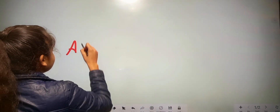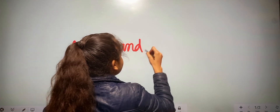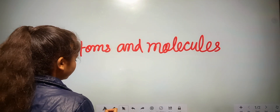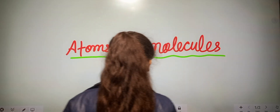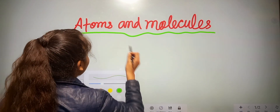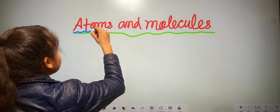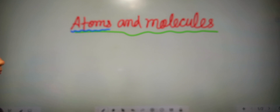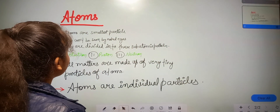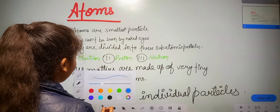Hello everyone, I hope you all are fine. In this video we will discuss about chemistry of class 9 — atoms and molecules. Our chapter name is atoms and molecules, so let us discuss one by one all the points. Our first term is: what is an atom?